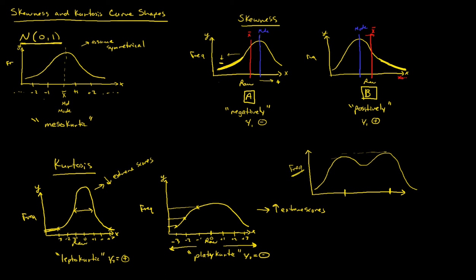You can also have uniform distributions that look completely rectangular and squared off, meaning the same frequency count occurred for every level of score on the x-axis. These last two aren't quite as important for this course, but you should be able to identify and recognize the shapes of skewed and kurtotic distributions — whether leptocurtic or platycurtic. That's it on curve shapes relative to skewness and kurtosis.